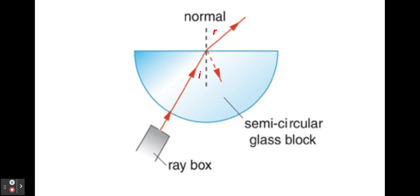One other thing to notice is that there's a small amount of reflected light off that inside surface. That's known as internal reflection, and if you go on to do Higher Physics you'll find out a lot more about that.